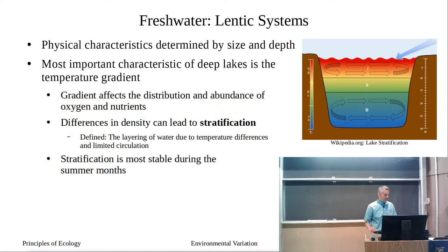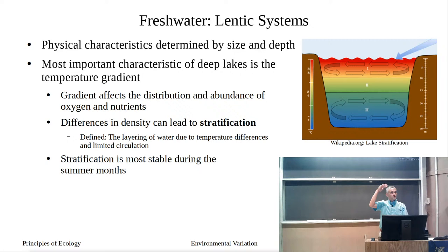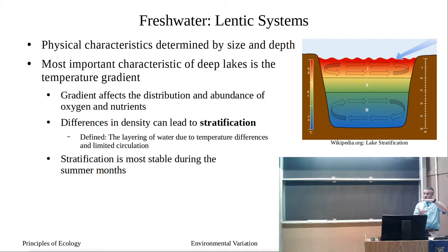We're going to talk about a deeper lake, because deeper lakes exhibit a temperature gradient throughout them. This gradient affects the distribution of both oxygen and nutrients — not the horizontal distribution, but the vertical distribution in the lake. The temperatures of water have different densities, and this leads to stratification.